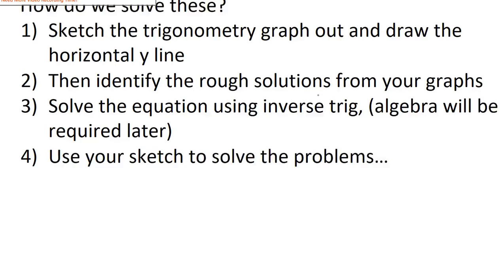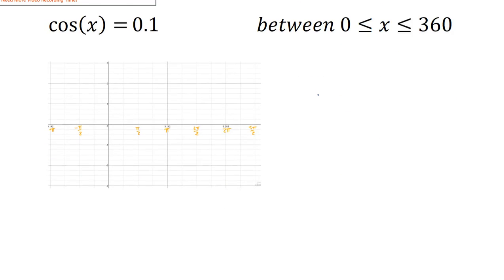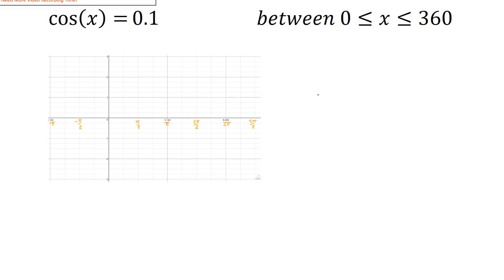For the first question, cos x equals 0.1. So my graph is in radians here, but the cosine graph should go through here, here, here, here, here, and here. We'll go back down to there. So there's my cosine graph. First step, draw that. My second step is I draw a little line at 0.1.